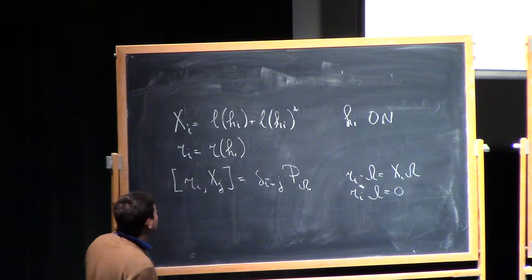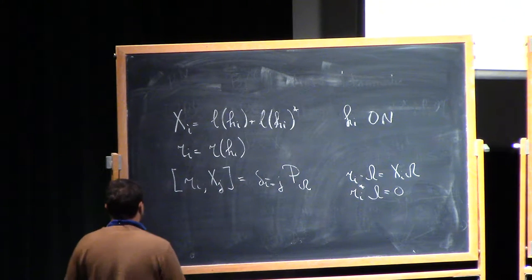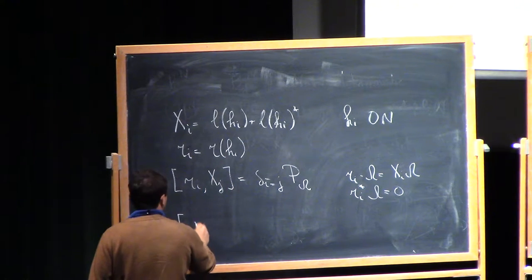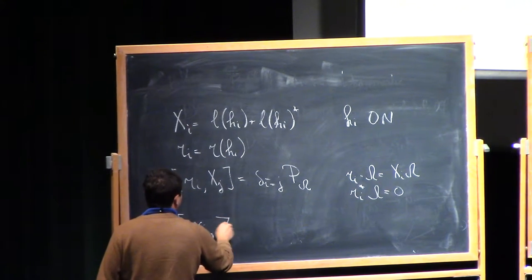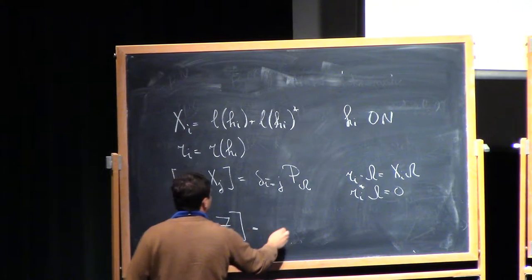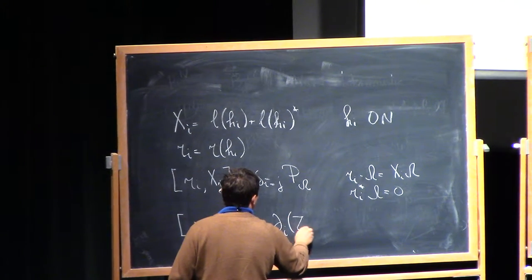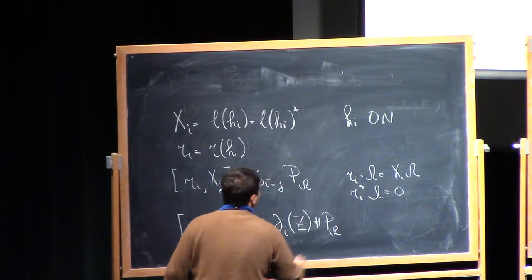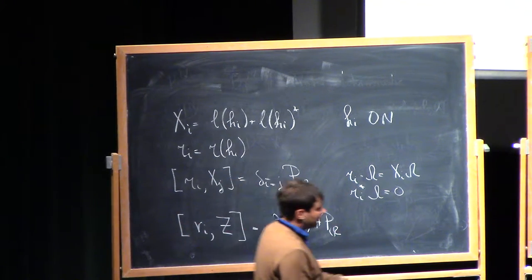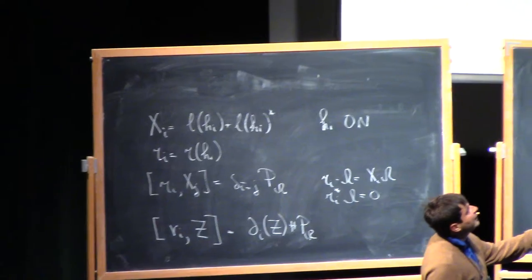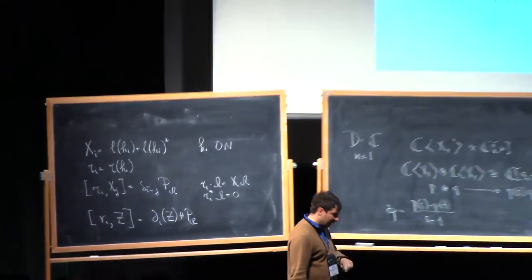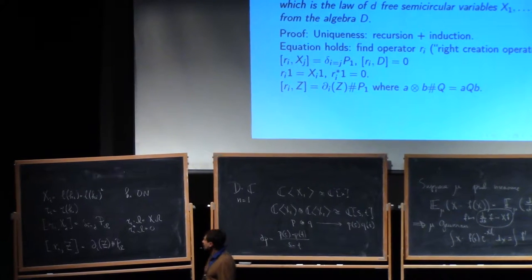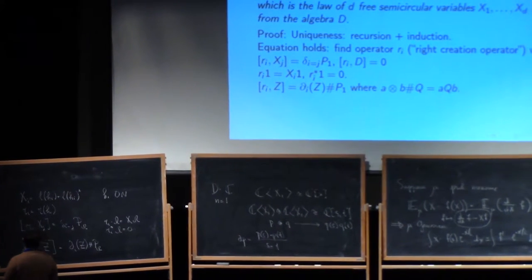The point is that you have the following formula: r_i acting on z is equal to d_i of z hash p_omega, where the hash is defined so that a tensor acts on something by multiplying it on left and right. So where does this formula come from?